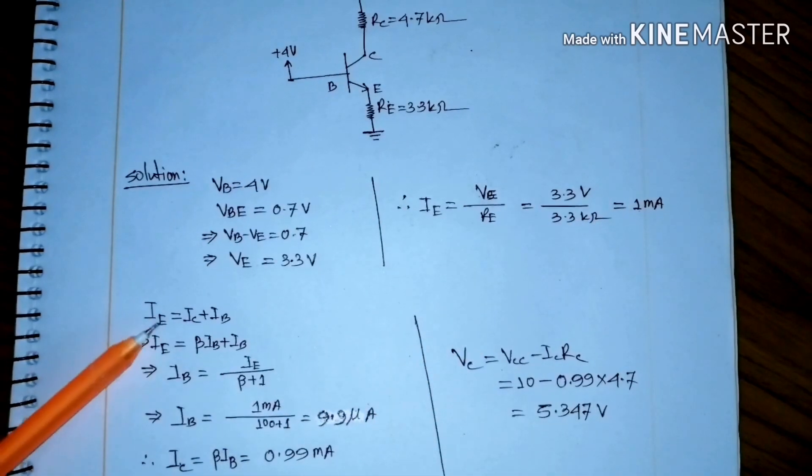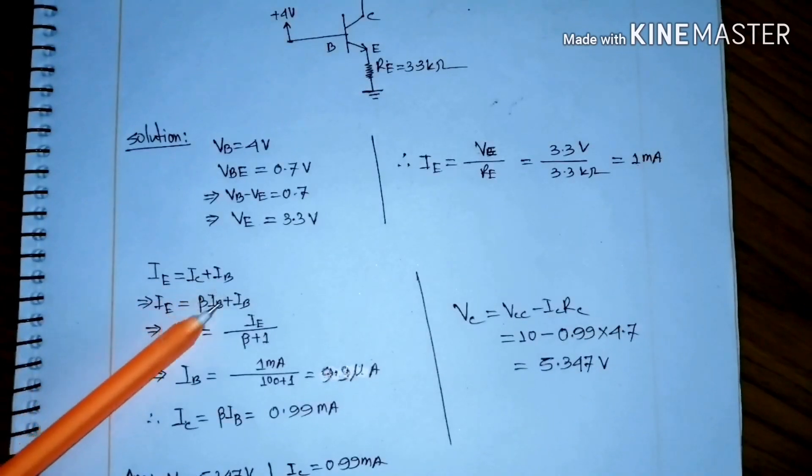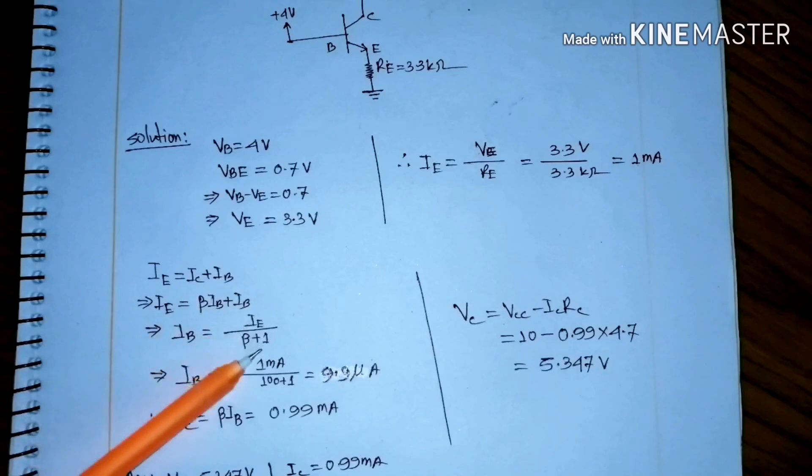Now, IE equals IC plus IB. IE equals beta IB plus IB. IE equals IB times beta plus 1. IB equals IE divided by 100 plus 1, which is 9.9 microamperes.